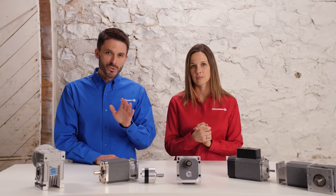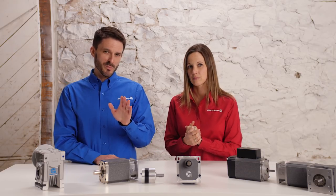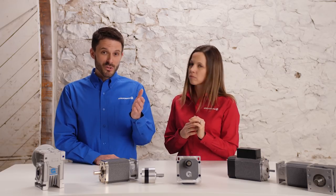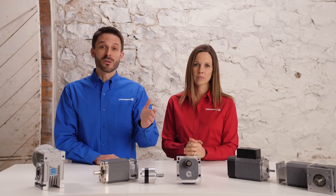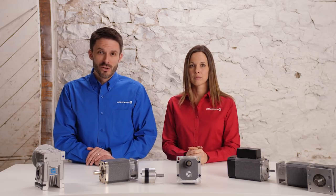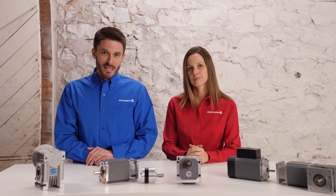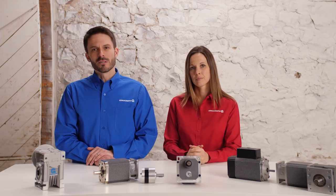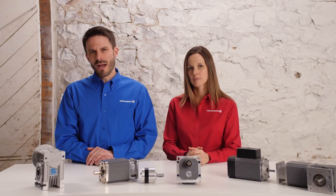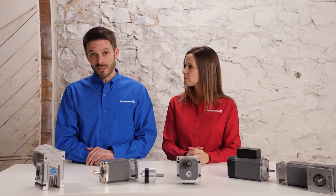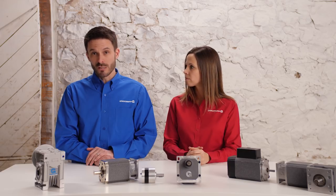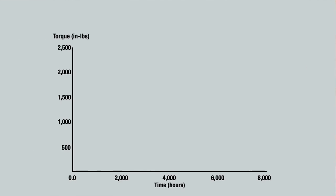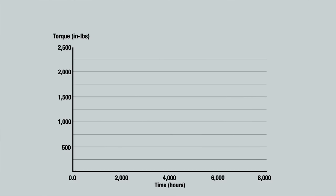Notice we aren't talking about reducer ratios at this point. Even though it will impact the torque rating, it's typically determined later in the process during the motor selection. The first step to determining output torque is to match the life requirements of the gearbox using the gearbox manufacturer's life curve.